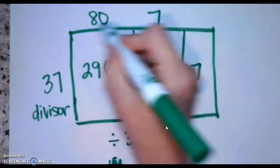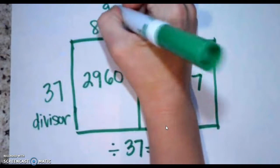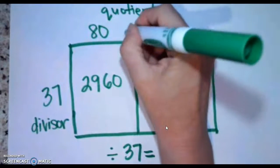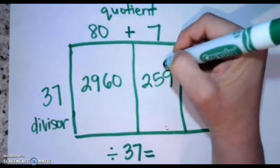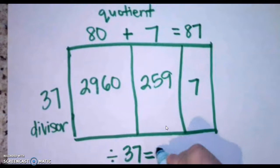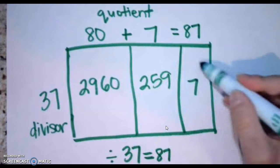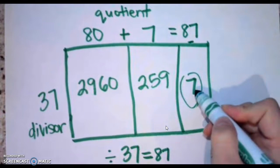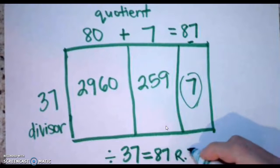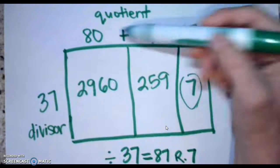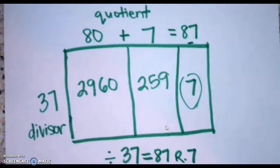Along the top is going to be my quotient. To find that quotient, I add my top numbers together: 80 from the first part plus 7 from the second part equals 87. That's my quotient. I notice that the 7 in the last box didn't have anything above it — it was blank. That tells me this is a remainder. So I have 87 remainder 7. Had there been another digit on top, I would have added it to my 80 and 7. So 87 times 37 gets close to my number, but there's a little left over.